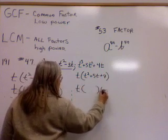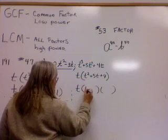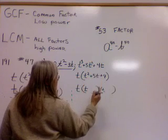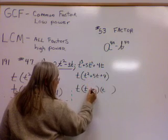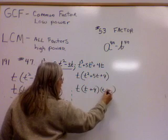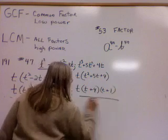Factor again, t stands, two parentheses, the t squared, factors of 4: 2, 2, 4, and 1. I need to add up to 5, so plus 4 plus 1. All right, and that one's factored.